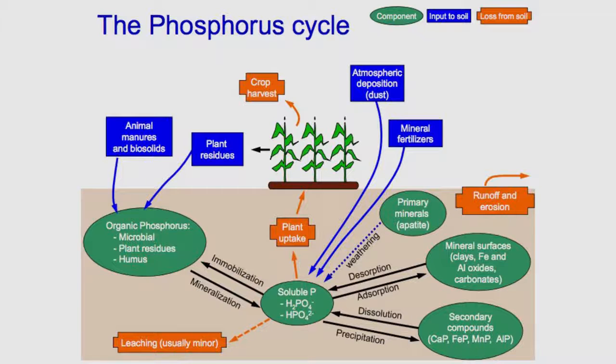Humans have greatly influenced the phosphorus cycle by mining phosphorus, converting it to fertilizer, and by shipping fertilizer and products around the globe. Transporting phosphorus in food from farms to cities has made a major change in the global phosphorus cycle.